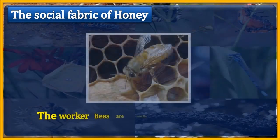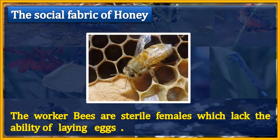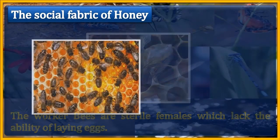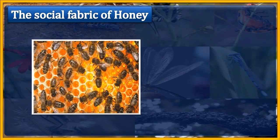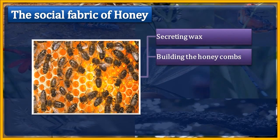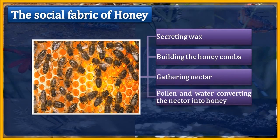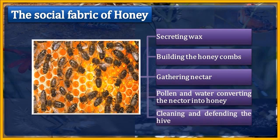The worker bees are sterile females which lack the ability to lay eggs. They do most of the work in the colony, like secreting wax, building the honeycombs, gathering nectar, pollen and water, converting the nectar into honey, and cleaning and defending the hive.